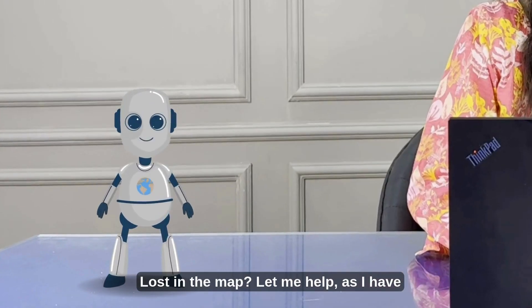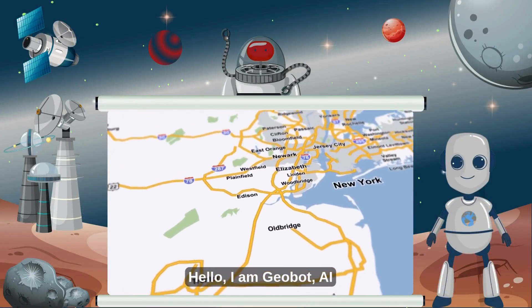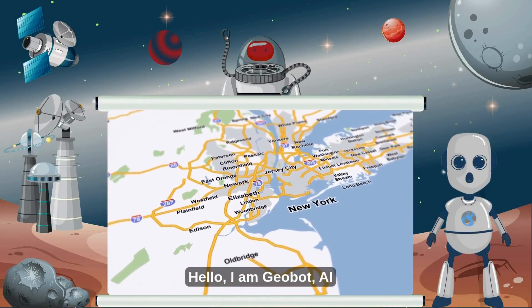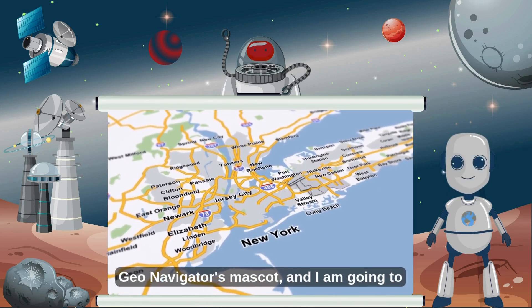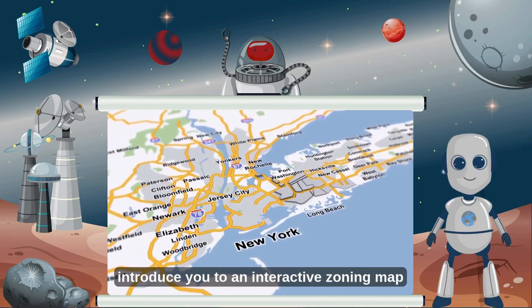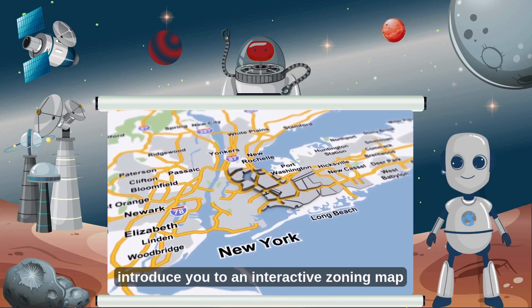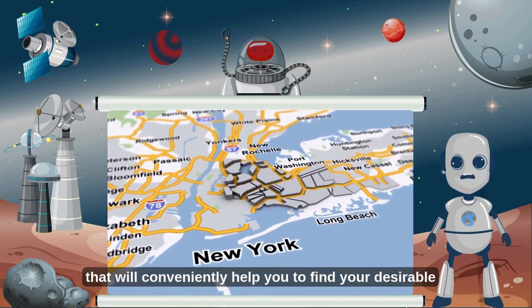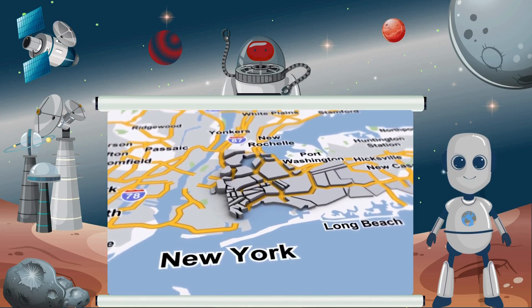Lost in the map? Let me help, as I have got a smarter way to map the city. Hello, I am Geobot, AI Geo Navigator's mascot, and I am going to introduce you to an interactive zoning map that will conveniently help you find your desirable lands.